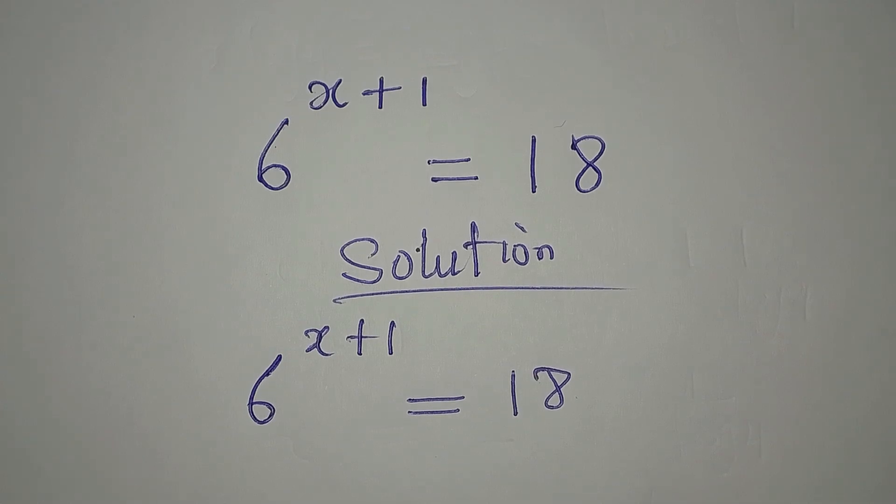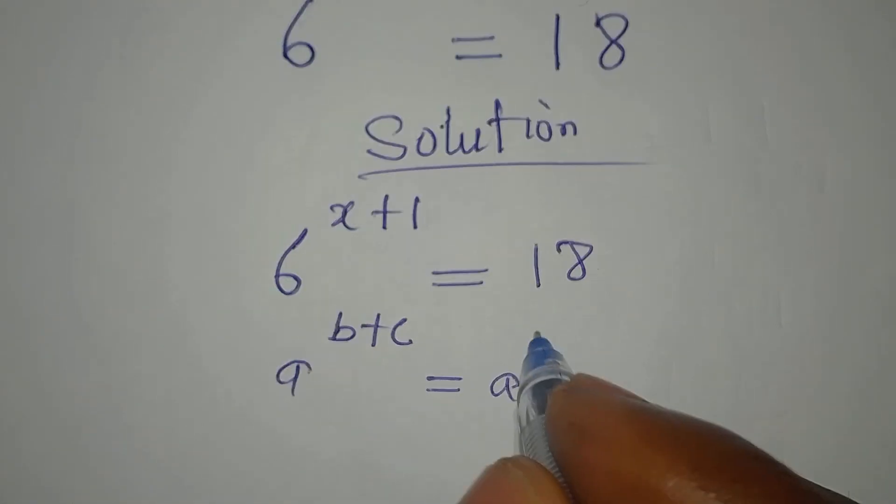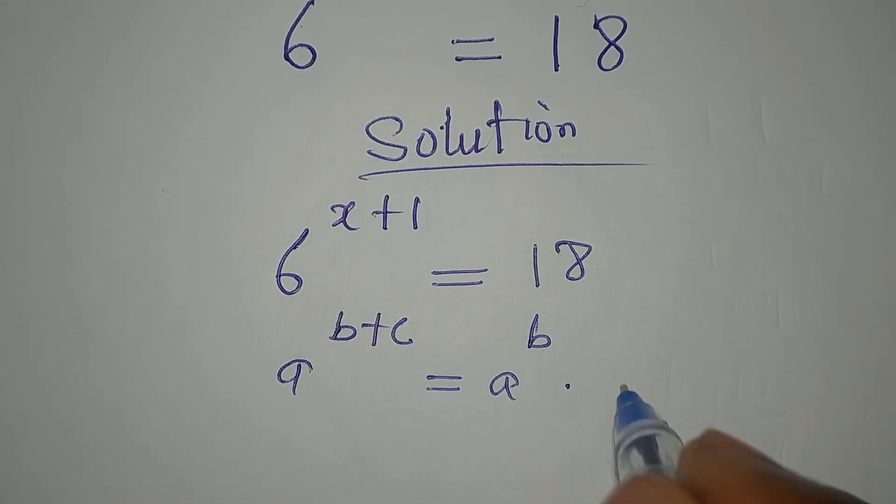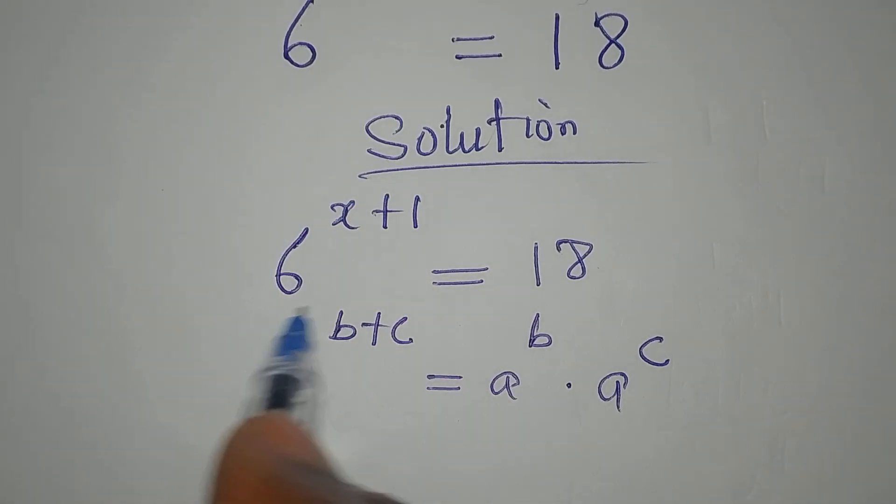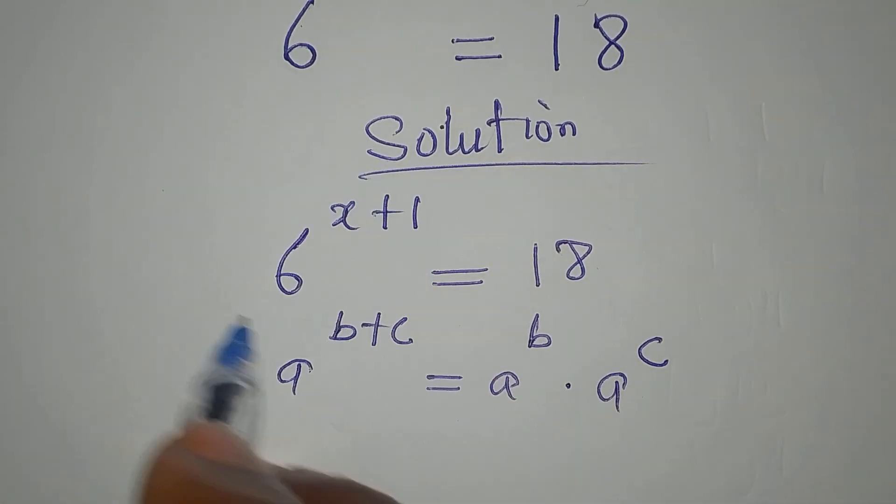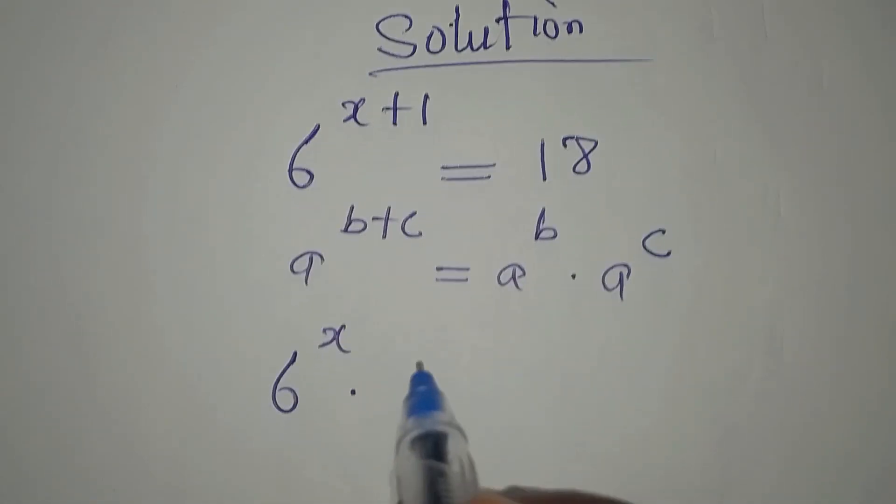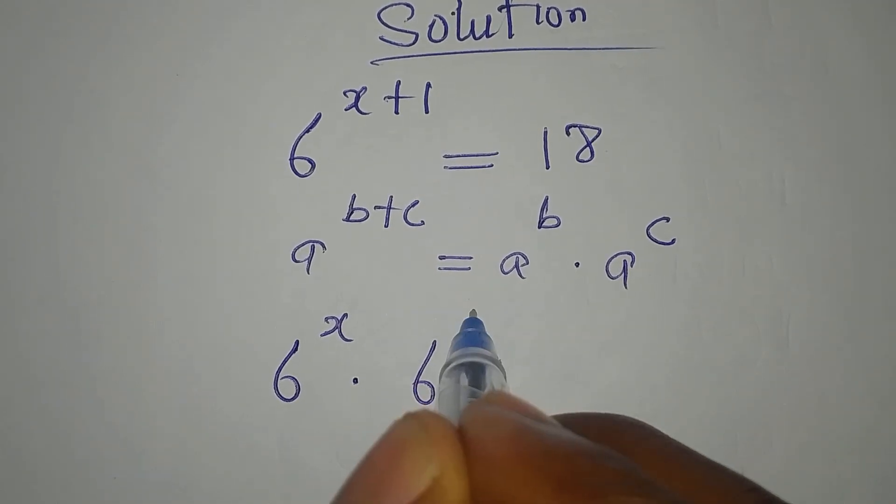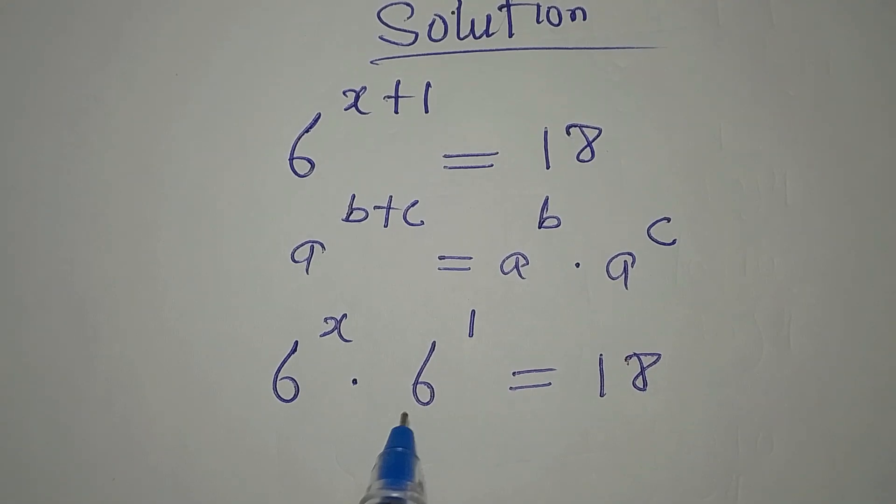Because we know that if we have a to the power of b plus c, this is the same thing as a to the power of b multiplied by a to the power of c. So if I apply the same thing here, I will have it in this form: 6 to the power of x multiplied by 6 to the power of 1 equals 18.